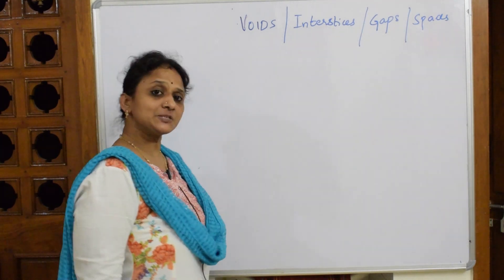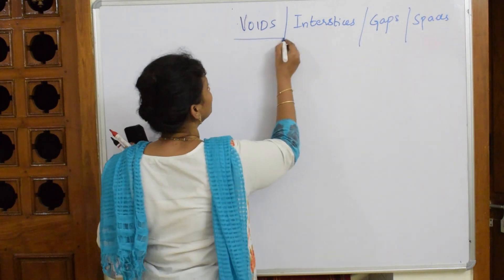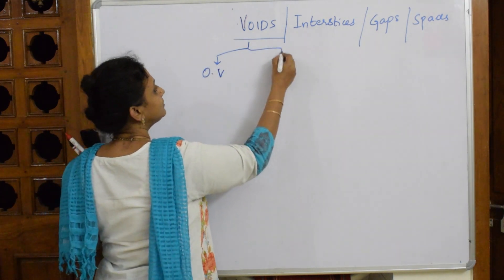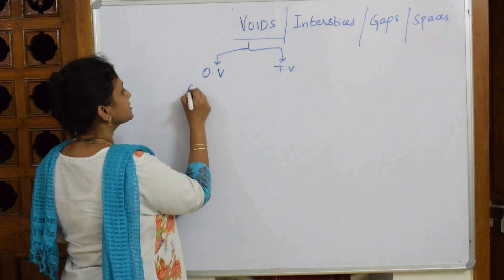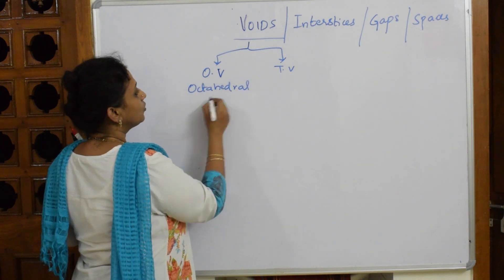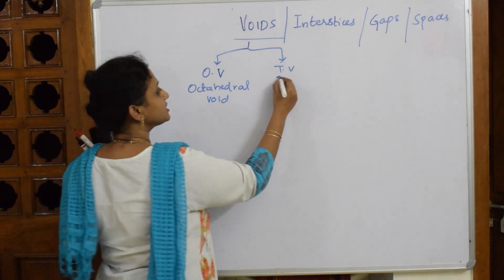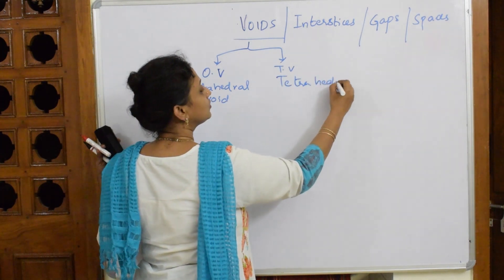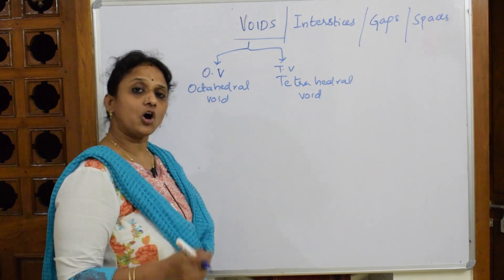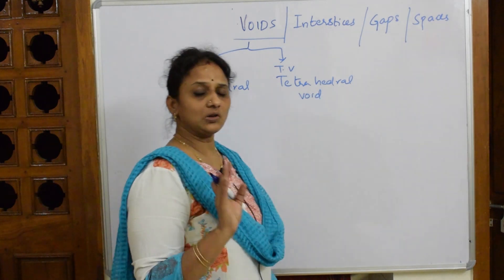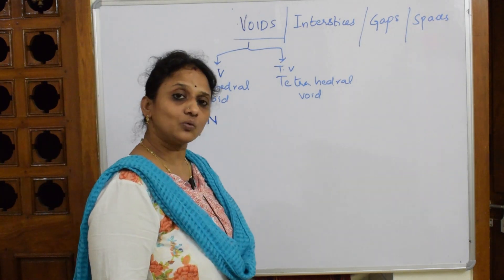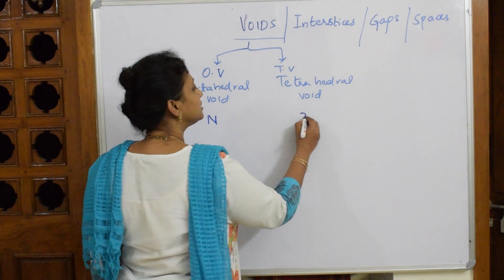Basically, when I speak about voids, voids are of two types: octahedral void and tetrahedral void. O stands for octahedral void and T stands for tetrahedral void. Just remember one thing before I start with the derivation.